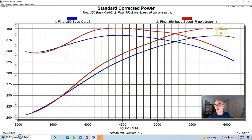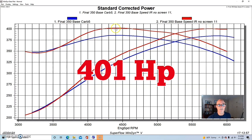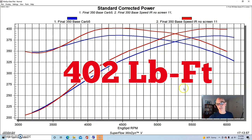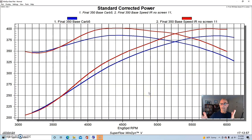This thing equipped with stack injection made right at 400 horsepower, 401, and torque was 402 foot pounds of torque. So just like it was with the carbureted combination, it basically made the same horsepower as it did torque. And what we liked is that we got a good solid gain through most of the RPM range.